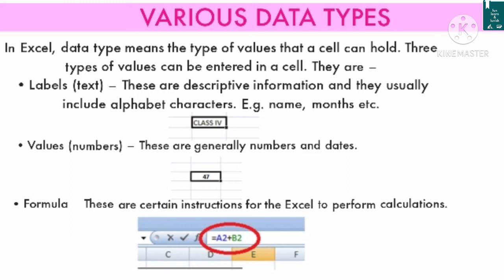The various data types in Excel: data types means the types of value that a cell can hold. Three types of values can be entered in a cell: Labels (text) — descriptive information that usually includes alphabetic characters, such as names and months; Values — generally numbers and dates; and Formulas — instructions for Excel to perform calculations.